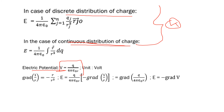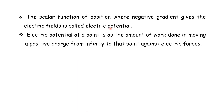Electric potential V is equal to Q divided by 4 pi epsilon_0 R. The electric potential varies as 1/R. The scalar function of position whose negative gradient gives the electric field is called electric potential. Electric potential at a point is the amount of work done in moving a positive charge from infinity to that point against electric forces.